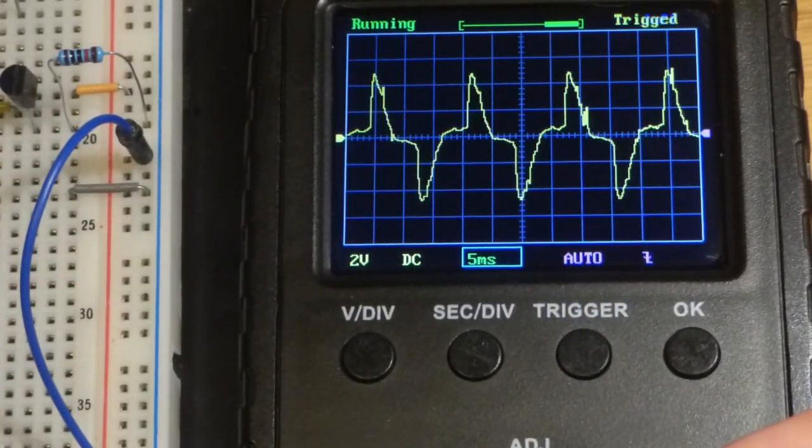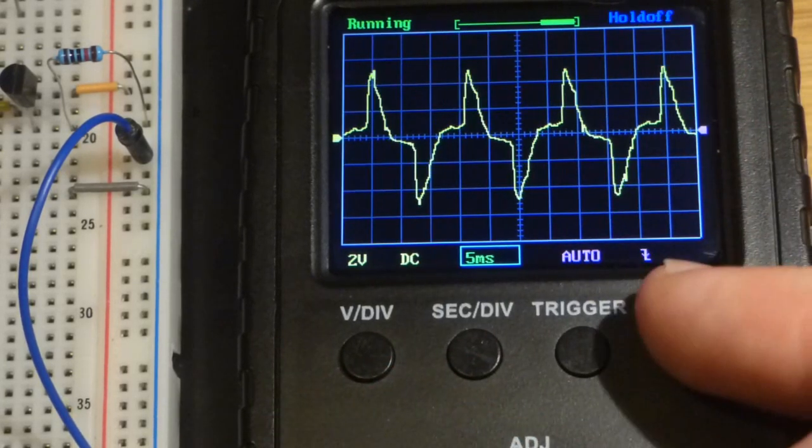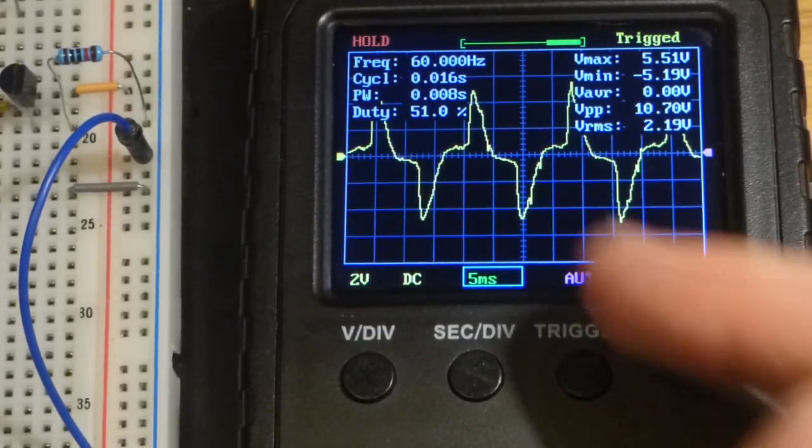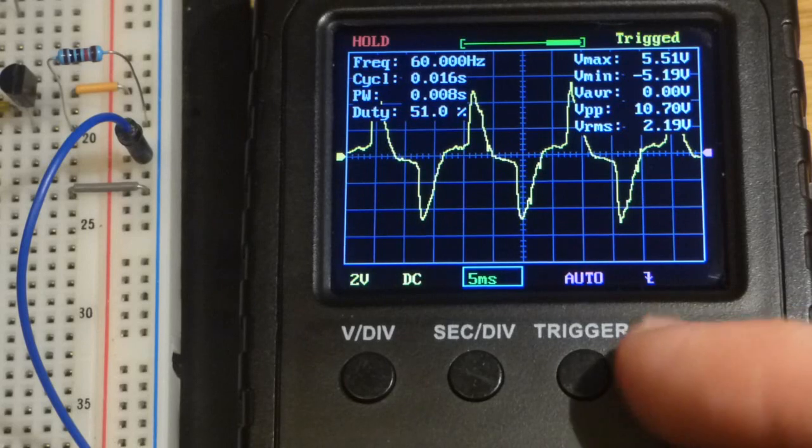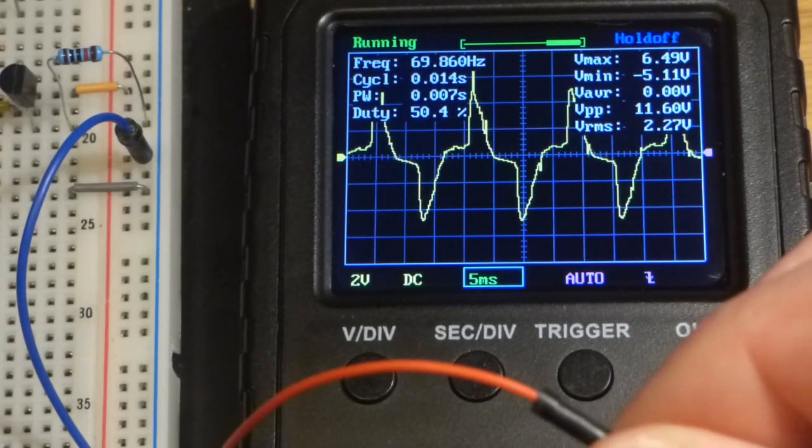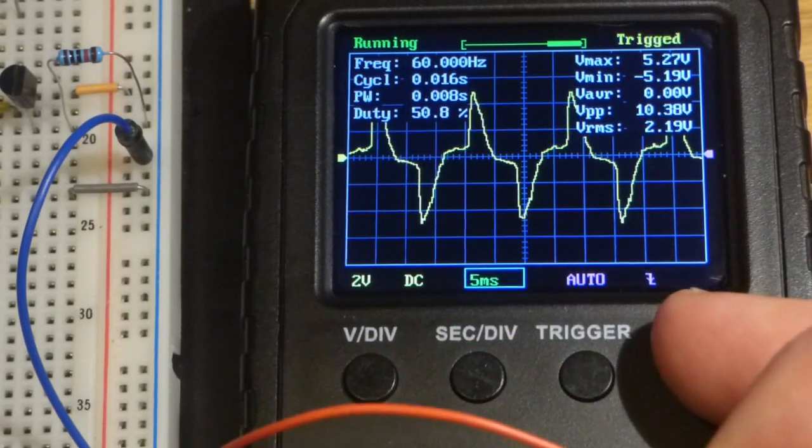Now it's paused. It's showing 60 Hertz right there, which is how often the current changes direction in the household power supply.